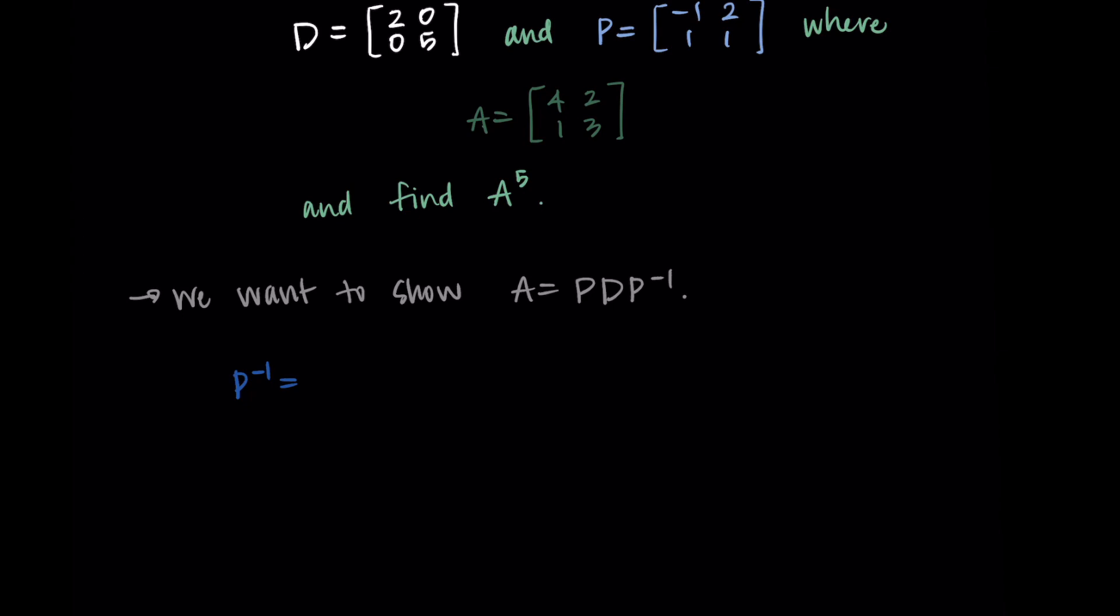To find the inverse of P, remember our formula: it's 1 over AD minus BC, and then we swap the A and the D elements and we put negatives on the B and the C elements. For our matrix, this is 1 over negative 1 minus 2. In my matrix, I'm going to swap the A and the D and put negatives on the B and the C. In my first row, I have 1, negative 2, and in the second row, I have negative 1, 1.